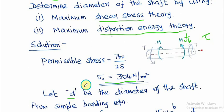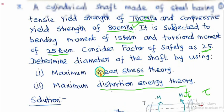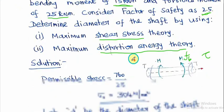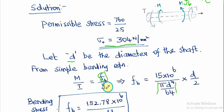Now we use the flexure bending equation: M/I = σ/y. For a circular shaft, the second moment of area I = πd⁴/64, and y = d/2. Substituting M = 15 kNm = 15×10⁶ Nmm, and simplifying, the d⁴ terms reduce so we get bending stress σ_b = 152.78×10⁶ / d³.